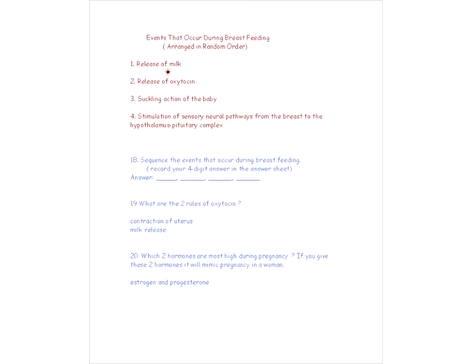Question 19: what are the two roles of oxytocin? Oxytocin causes the release of milk — not the production, that was prolactin. It also causes the contraction of the uterus. Progesterone is the opposite — it inhibits the contraction of the uterus. Question 20: which two hormones are most high during pregnancy? If you give these two hormones to a woman it will mimic pregnancy — those are estrogen and progesterone, the two major female hormones.